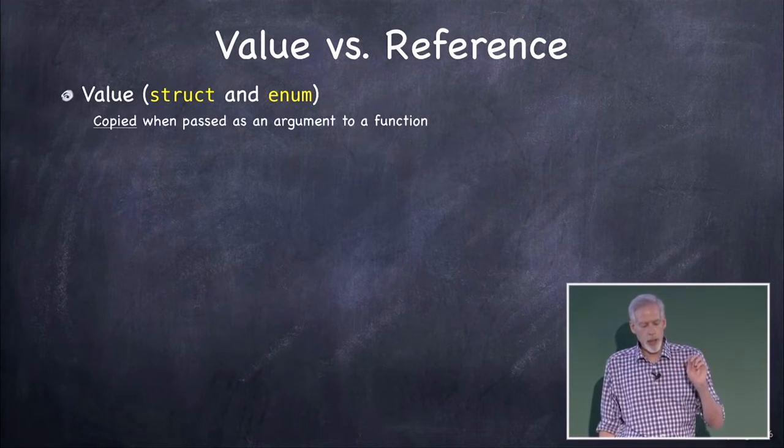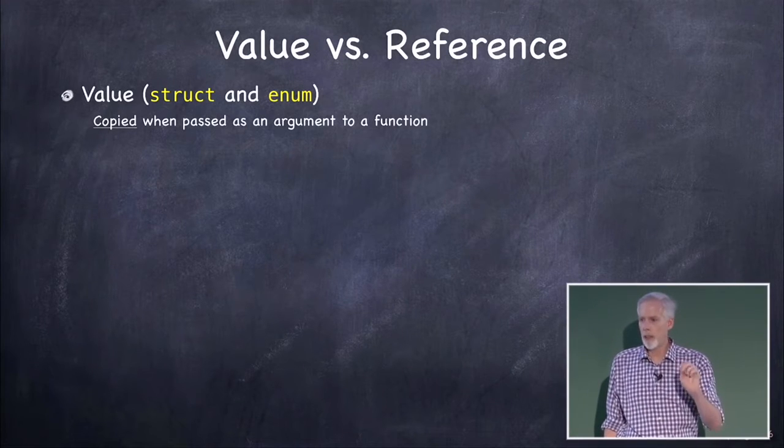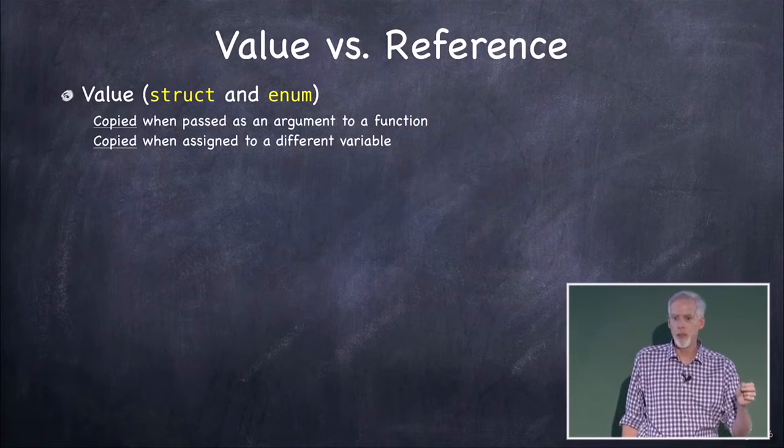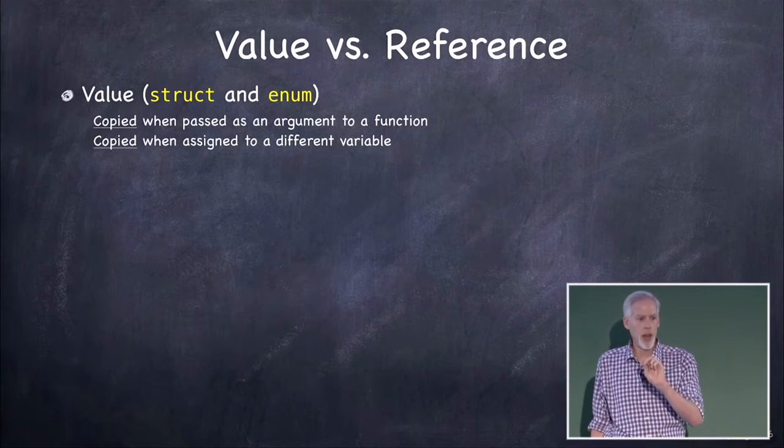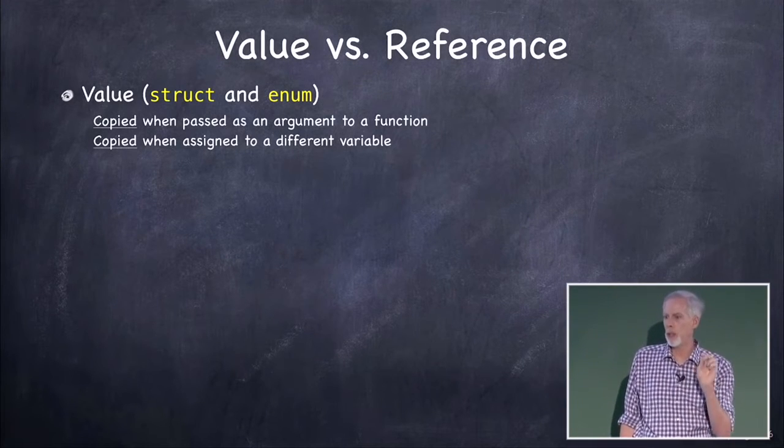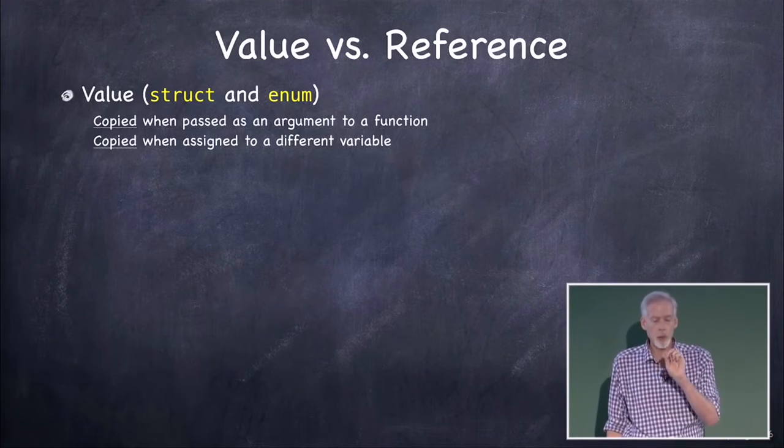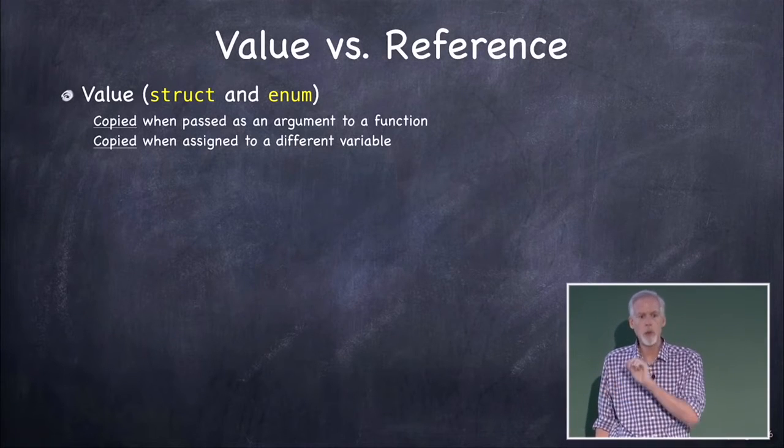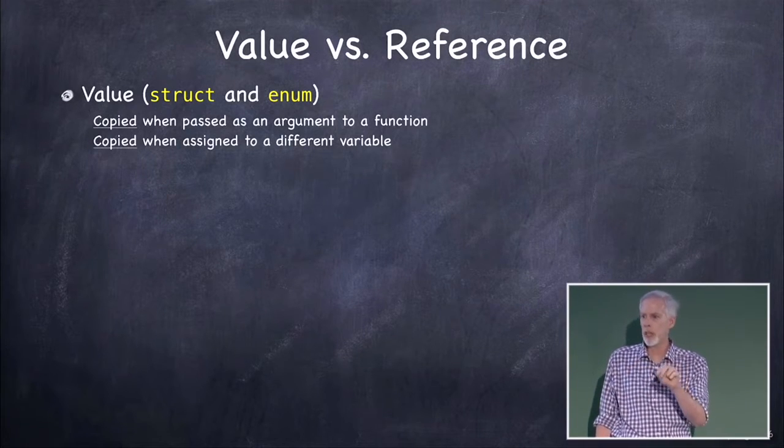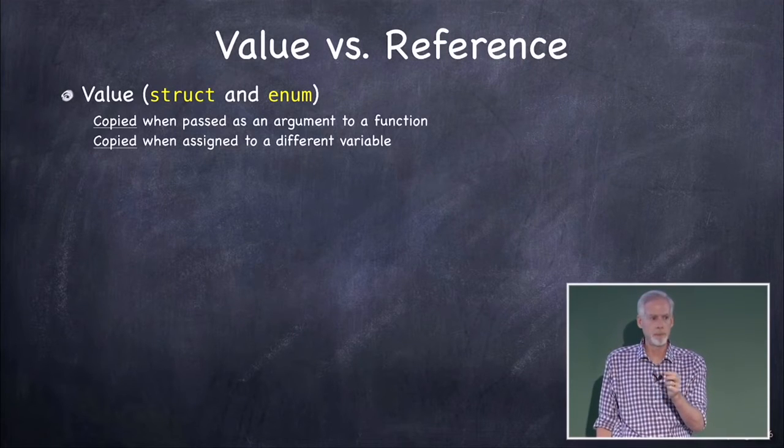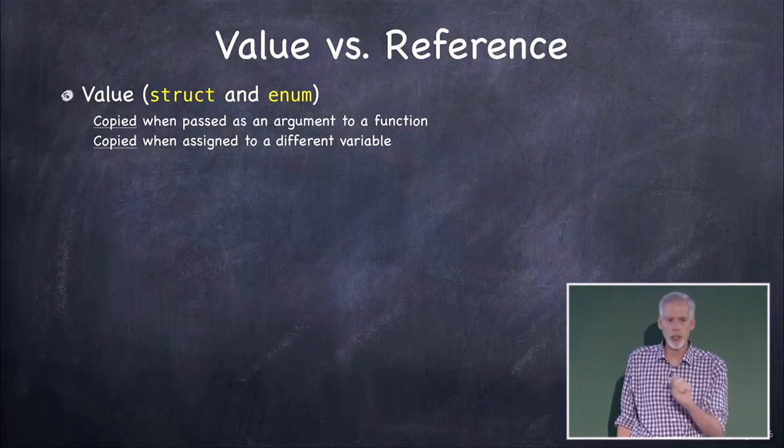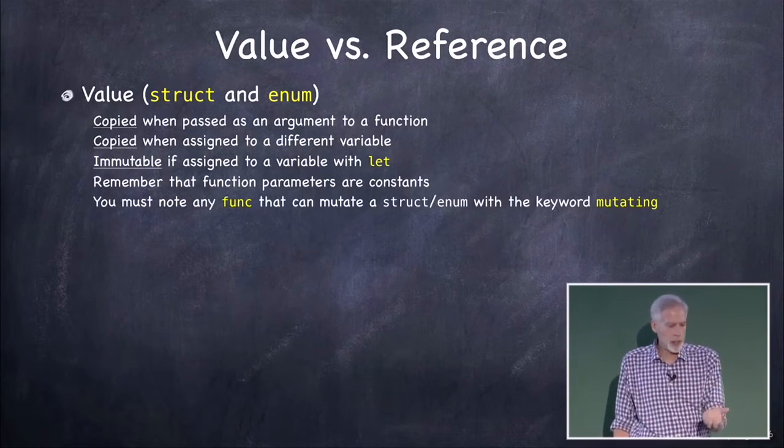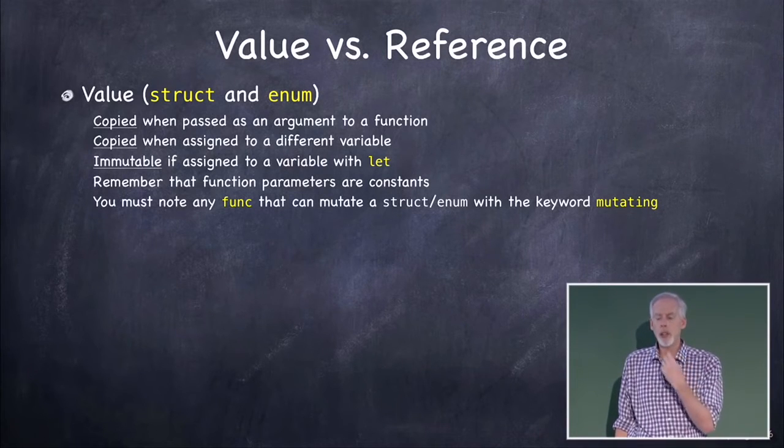Value means that it's copied when passed as argument to a function, that's kind of obvious, but it also copies when you assign it to another variable. If I say var x equals y, if y is a value type, x will be a copy of y. So if y is an array, and you say x equals y, and then you say x append this thing. That thing will not be appended to y, because x was a copy of y. You see what I'm talking about there? So that's a big difference with value semantics. Even just assigning them is a copy of them.